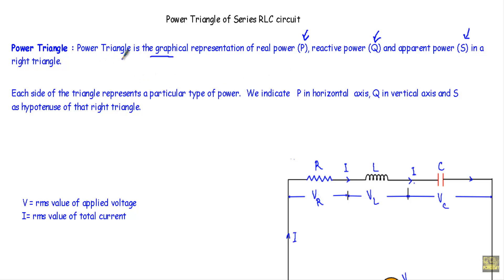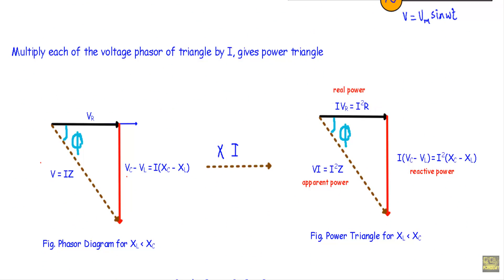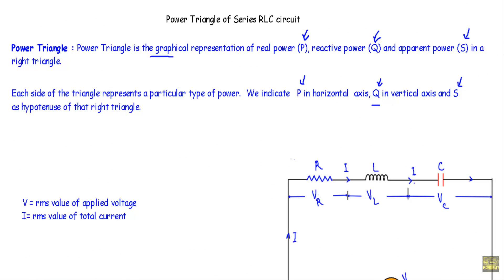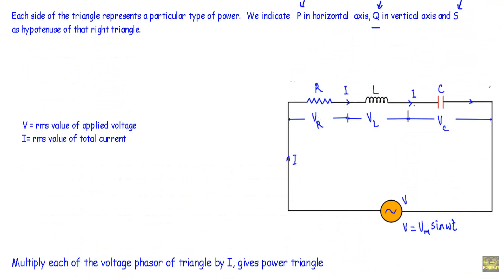Each side of the triangle represents a particular type of power. We indicate real power P on the horizontal axis, reactive power on the vertical axis, and the apparent power as the hypotenuse of that right triangle.